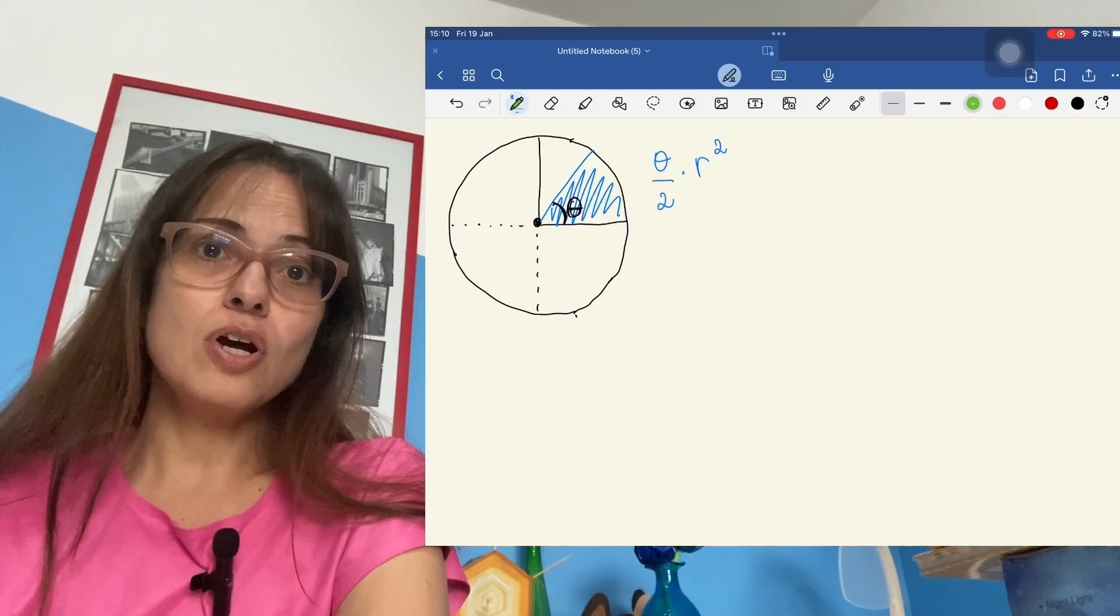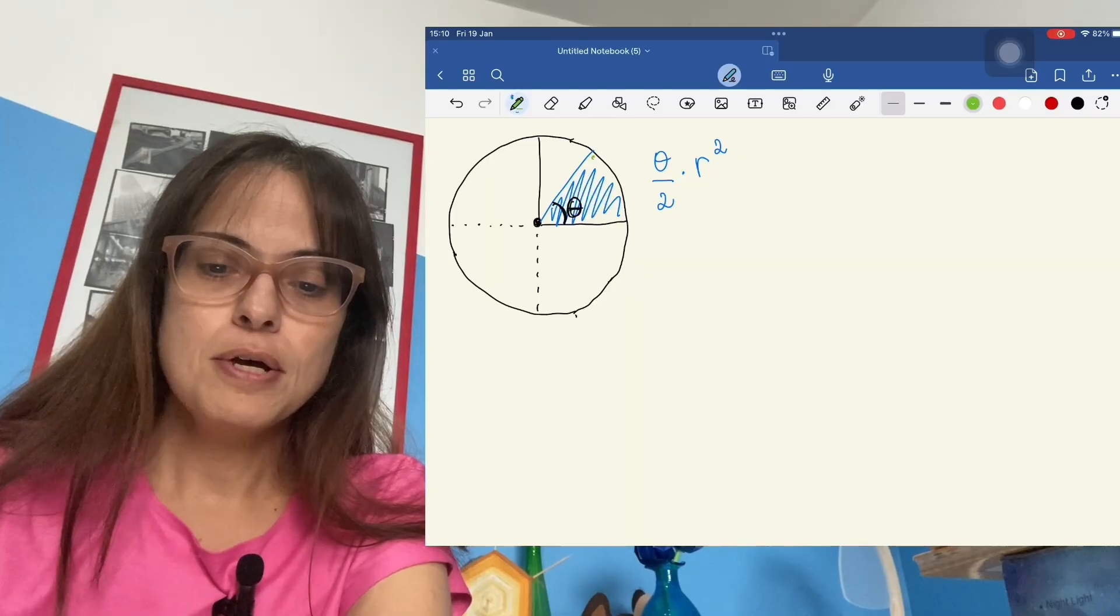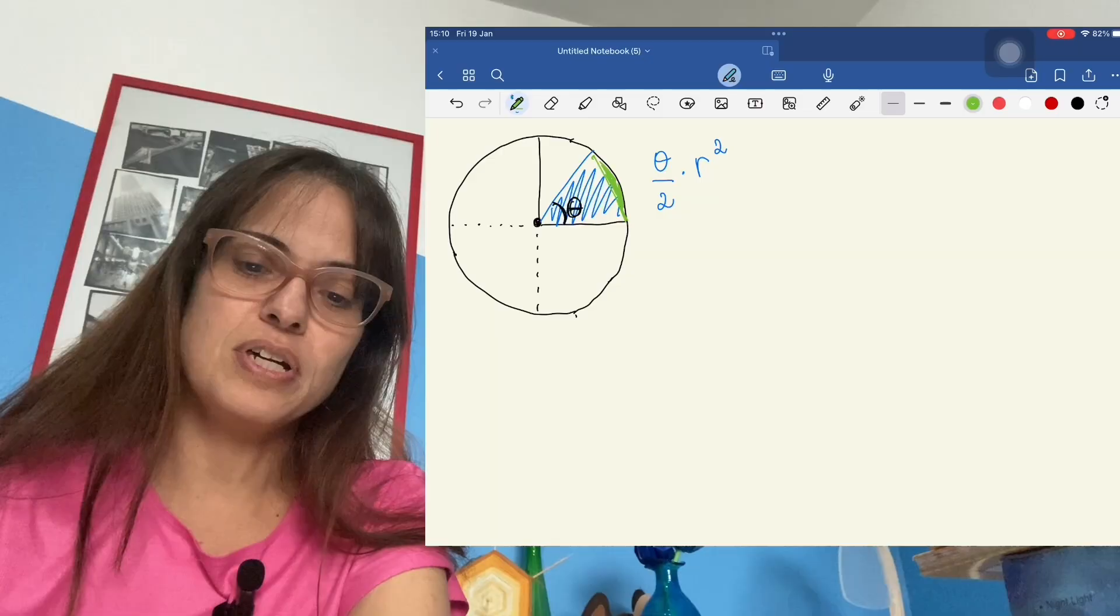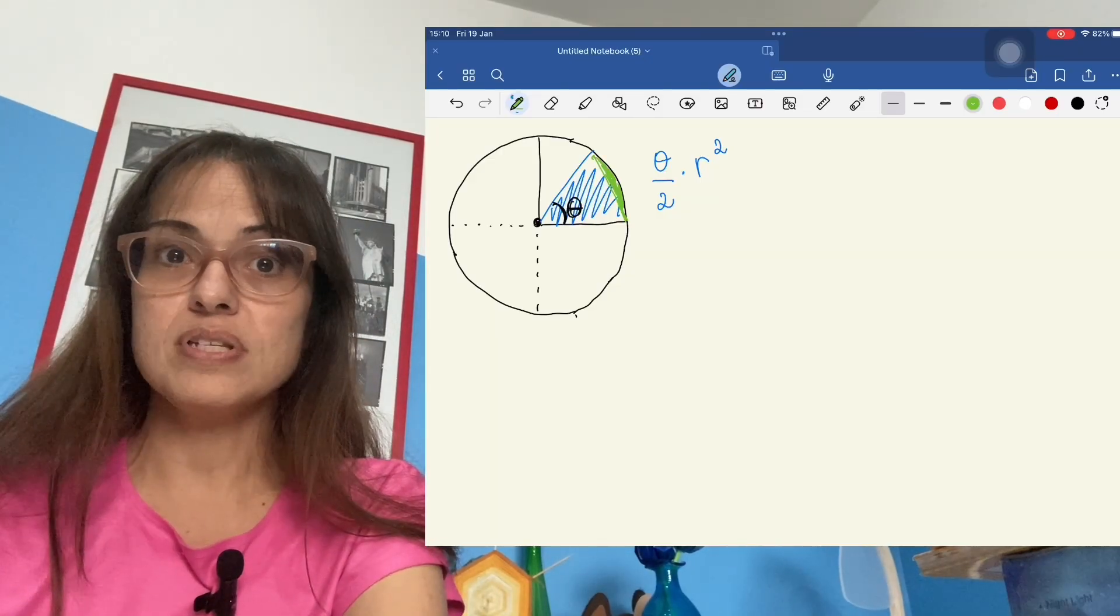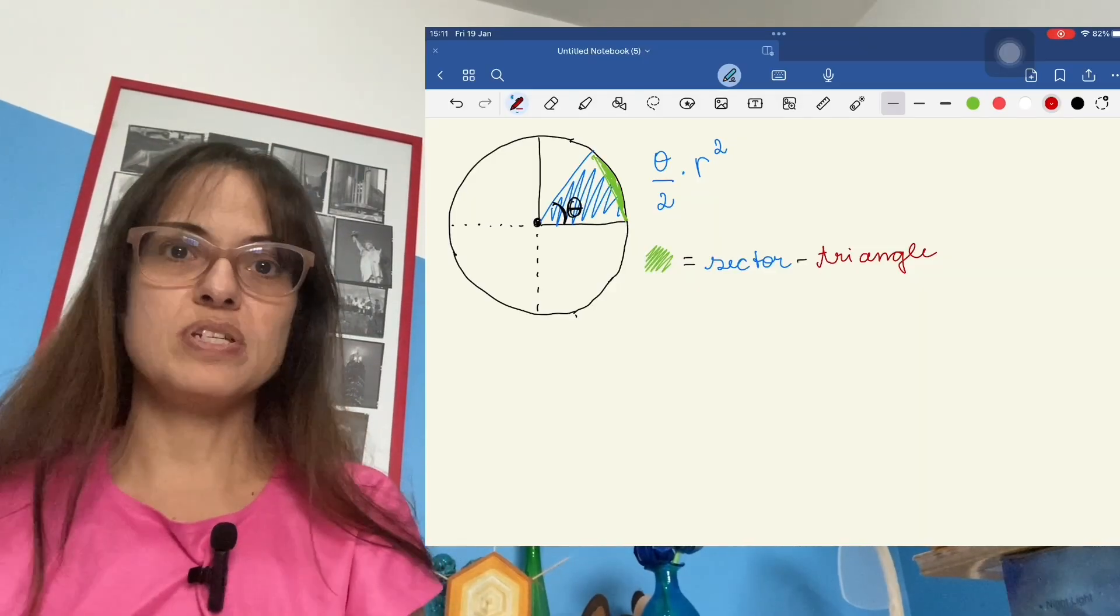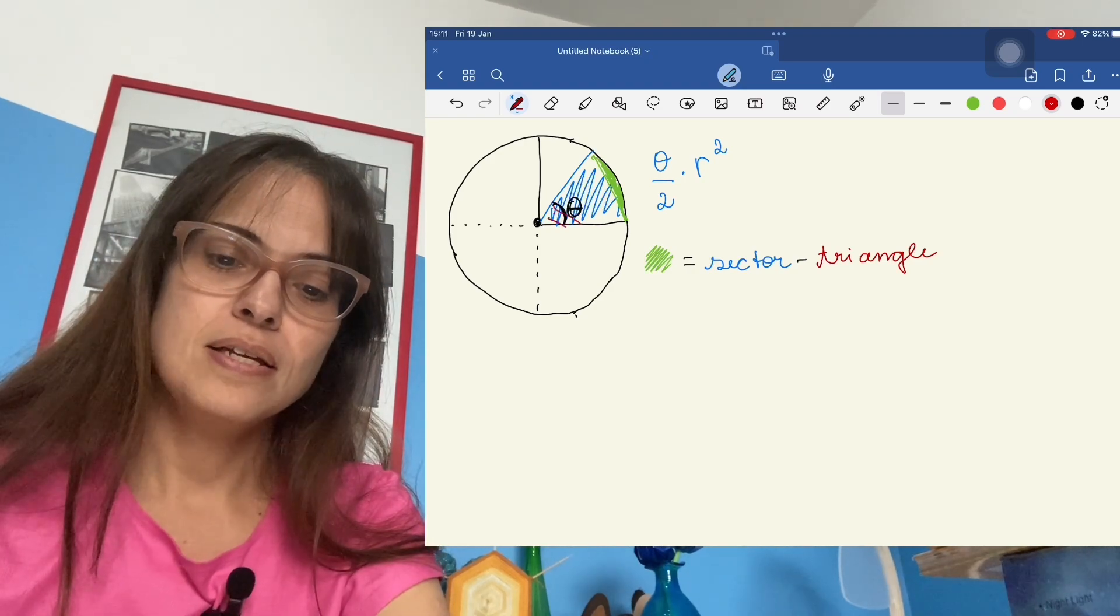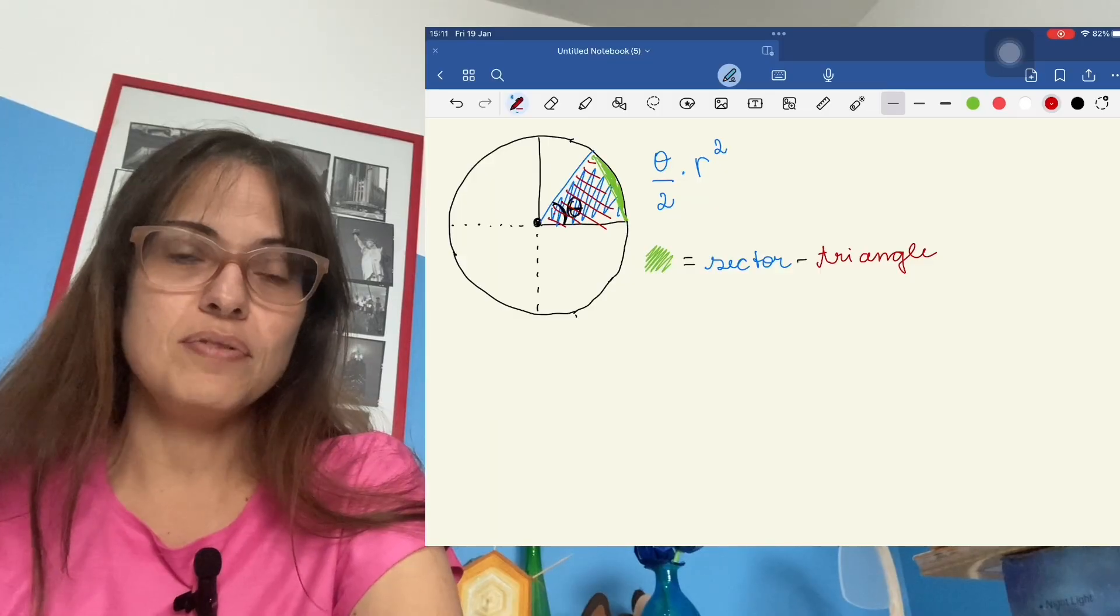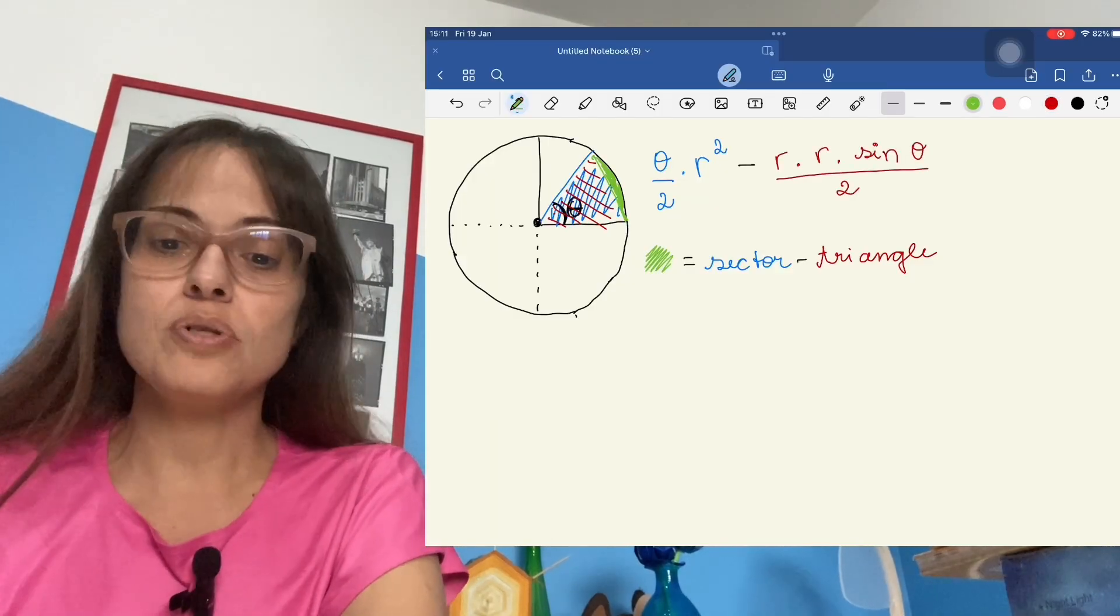It's very common for this type of exercise to ask you not just for the area of the sector, but to make a different shape using the pieces of the picture. Like for example, this green area here, how would you calculate this area? The typical approach is to say that the green area is the blue sector minus a triangle. And we also have a formula for finding the area of a triangle.